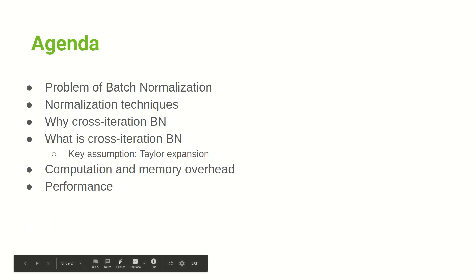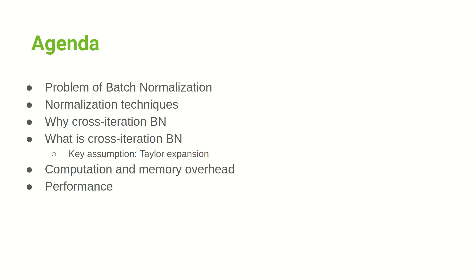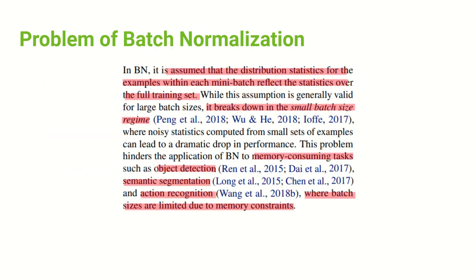Let's jump to the agenda. We're going to talk about: first, the problem of batch normalization — of course there are problems, and that's why new papers are trying to solve them. Then we'll do a brief run-through of normalization techniques, bring up the motivations for Cross-Iteration Batch Normalization, discuss the key assumption of Taylor expansion, cover computational and memory overhead, and finally show some performance results.